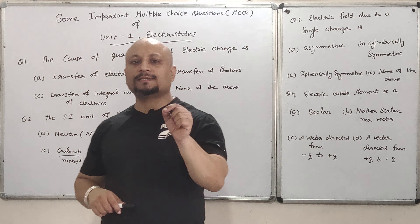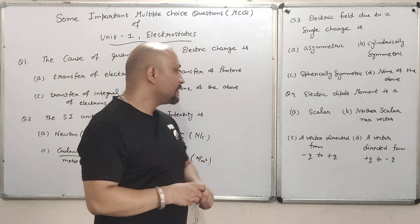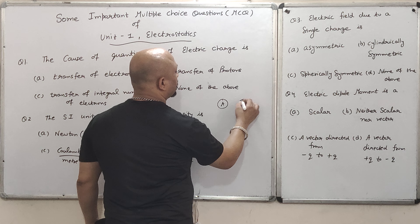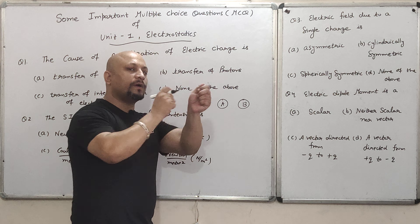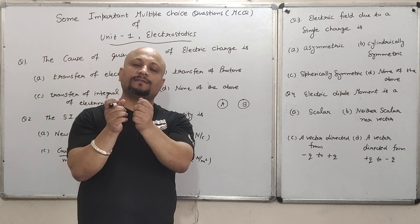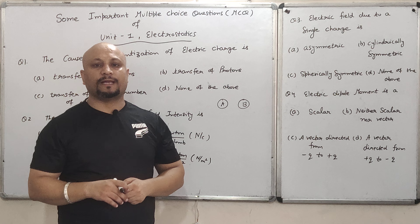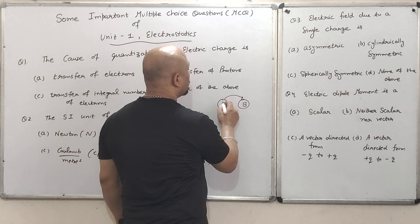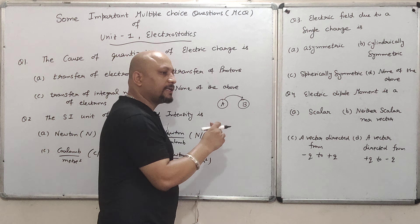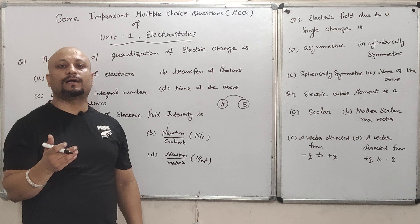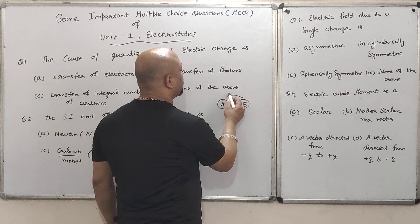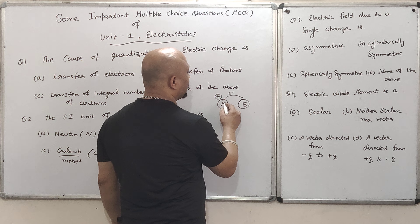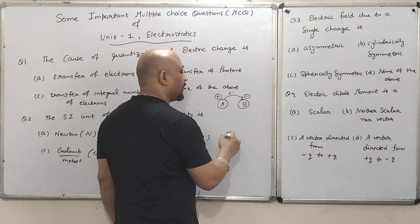The charge is always quantized. Suppose you have two bodies — body A and body B. When you rub them against each other, there is a transfer of charge particles, meaning charge will transfer from one body to another. Where charge particles transfer, there will be a sign. Suppose the electrons shift from B to the left — one body will take a positive sign and the other will take a negative sign.